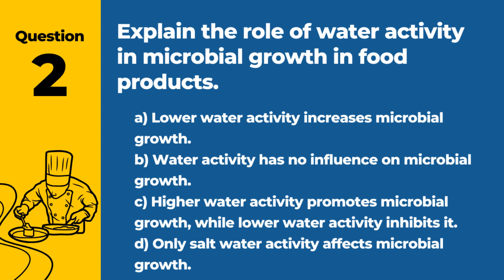Question 2. Explain the role of water activity in microbial growth in food products. a. Lower water activity increases microbial growth. b. Water activity has no influence on microbial growth. c. Higher water activity promotes microbial growth, while lower water activity inhibits it. d. Only salt water activity affects microbial growth. Answer: c. Higher water activity promotes microbial growth, while lower water activity inhibits it. Controlling water activity is a key method for preserving food safety.